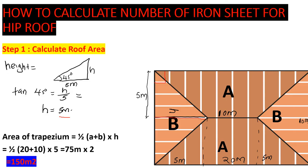Now we can find the area of the trapezium — section A-A. Area of trapezium = half × (a + b) × height. Here a is 20 meters (total length), b is 10 meters (ridge length), and height is 5 meters. That gives us 75 square meters.